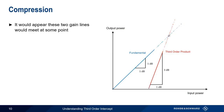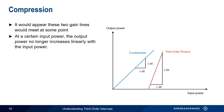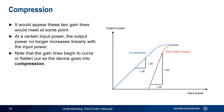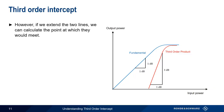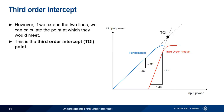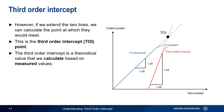In reality, however, this doesn't happen. Real-world devices have a limit on how much output power they can produce, regardless of the level of input power. Eventually, the max output power is reached, and the gain lines flatten out. When this point is reached, the device is said to be in compression. We could, however, pretend that compression doesn't exist, and extend the two gain lines of the fundamental and the third-order product until they meet. The point at which they would meet is called the third-order intercept point, because this is where the third-order product power would intercept the power of the fundamental. It's important to remember that, strictly speaking, third-order intercept is a theoretical point that we calculate based on measured values.